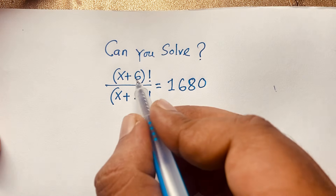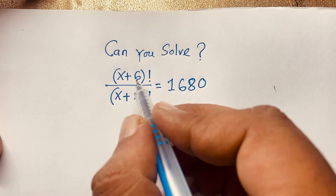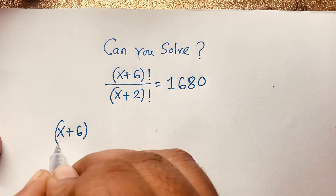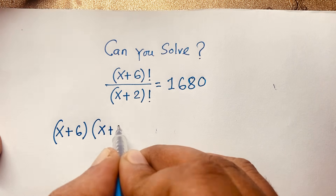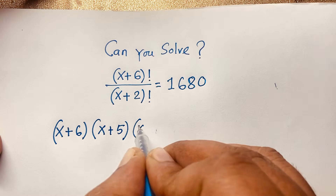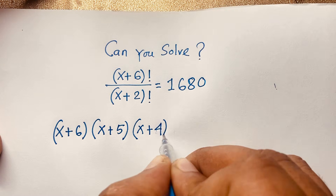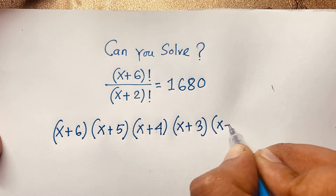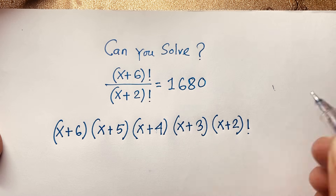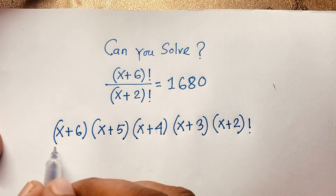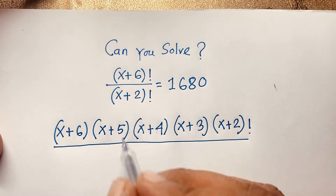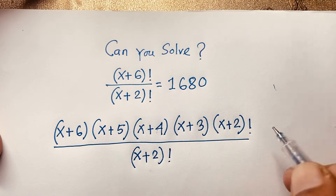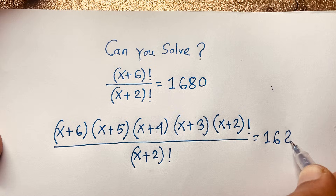First of all, here is (x+6) factorial. You can see that (x+6)! expands as (x+6) times (x+5) times (x+4) times (x+3) times (x+2)!. This (x+6)! over (x+2)! equals 1680.